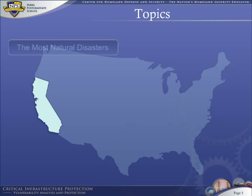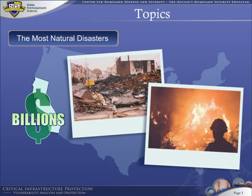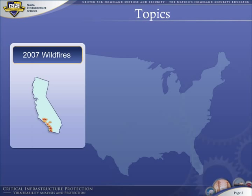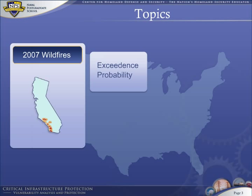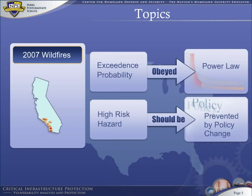California holds the dubious record for the most natural disasters among all states of the Union. Earthquakes and forest fires are the predominant hazards, costing billions of dollars per year. In this module, we study the largest of California's recent forest fires, called wildfires by Californians, and show that the exceedance probability for California wildfires obeyed a power law in 2007. Thus, wildfires are high-risk hazards that should be prevented by changes in policy.